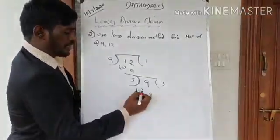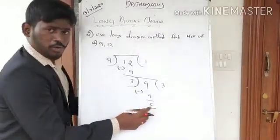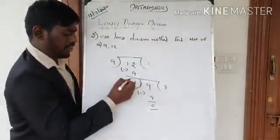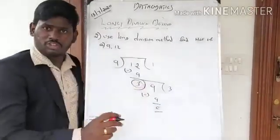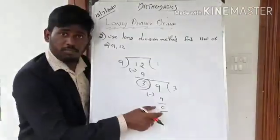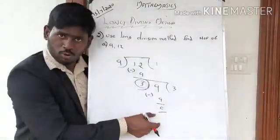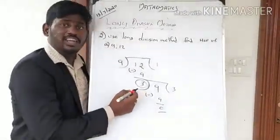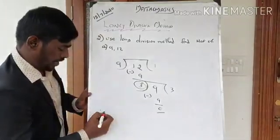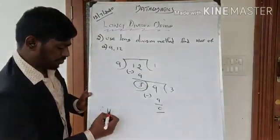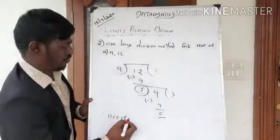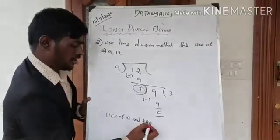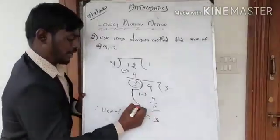Now 3 goes into 9 — 3 threes are 9. Subtract: 9 minus 9 equals 0. When you get the remainder zero, the current divisor is your HCF. Therefore, HCF of 9 and 12 is equal to 3.